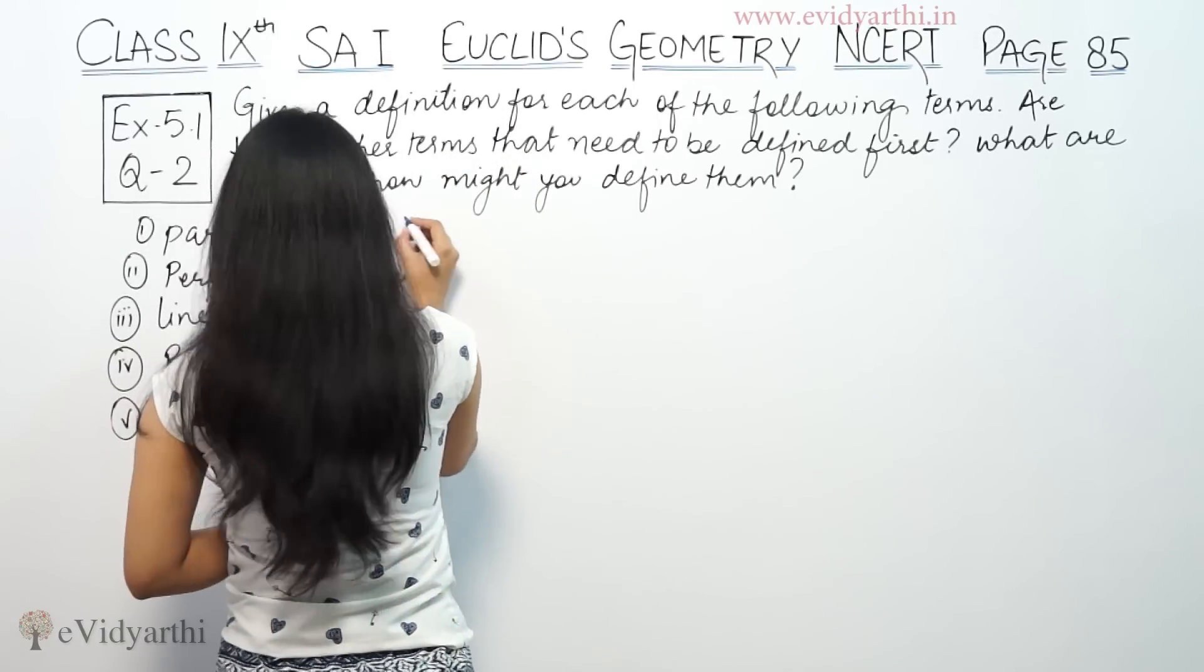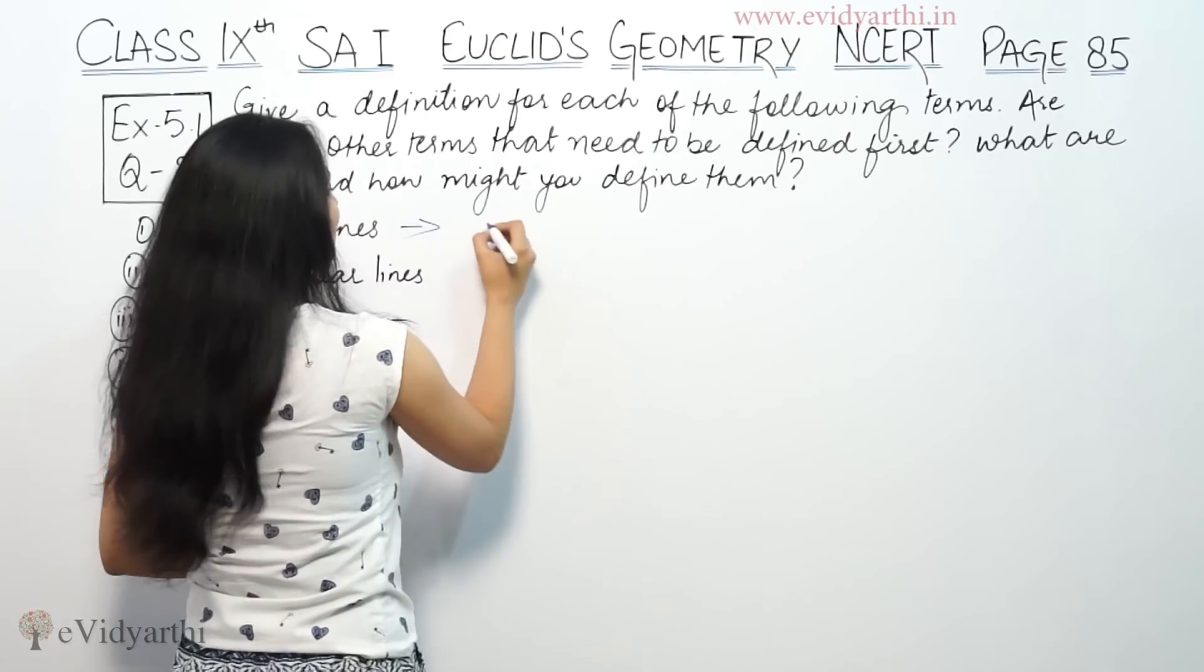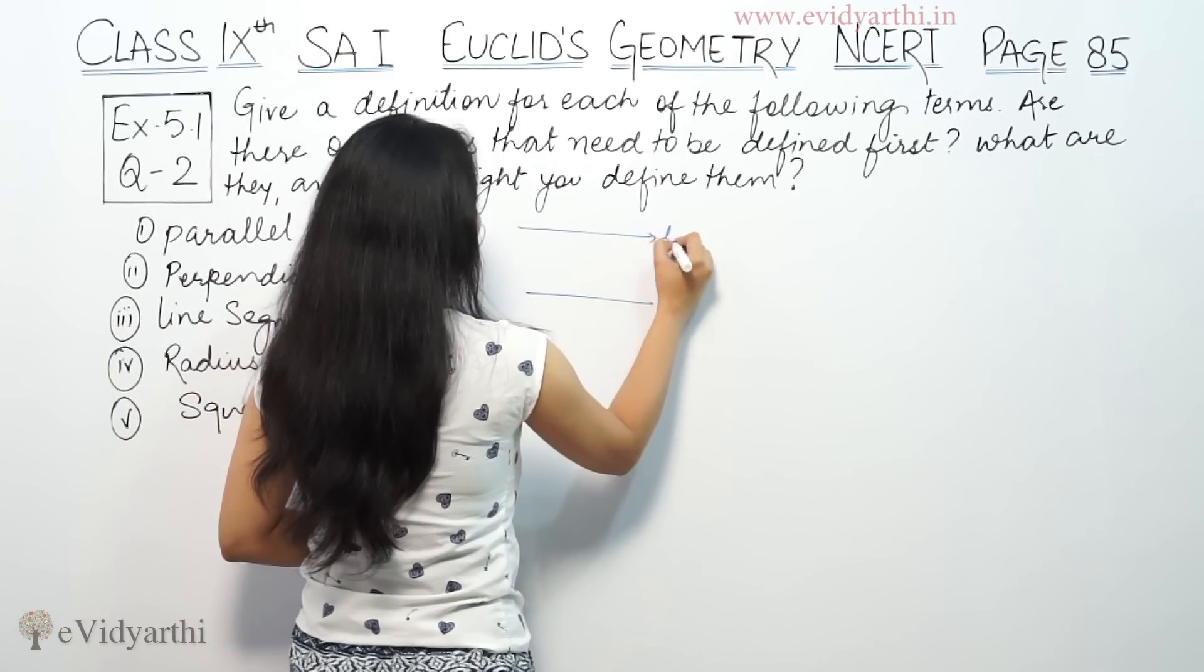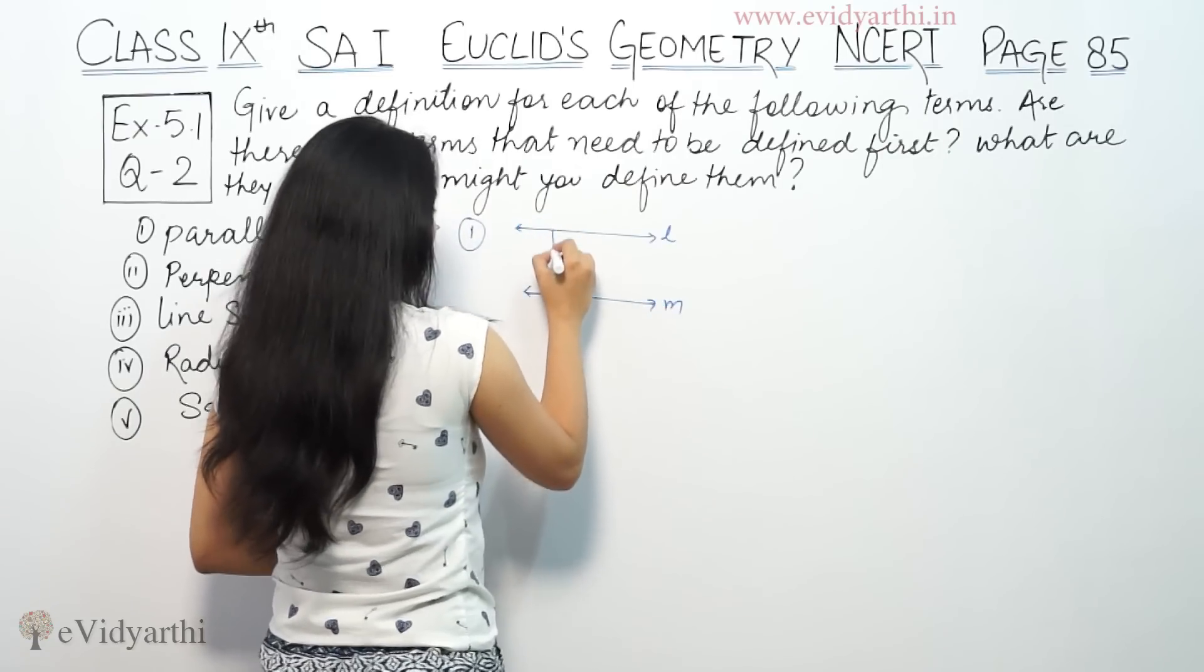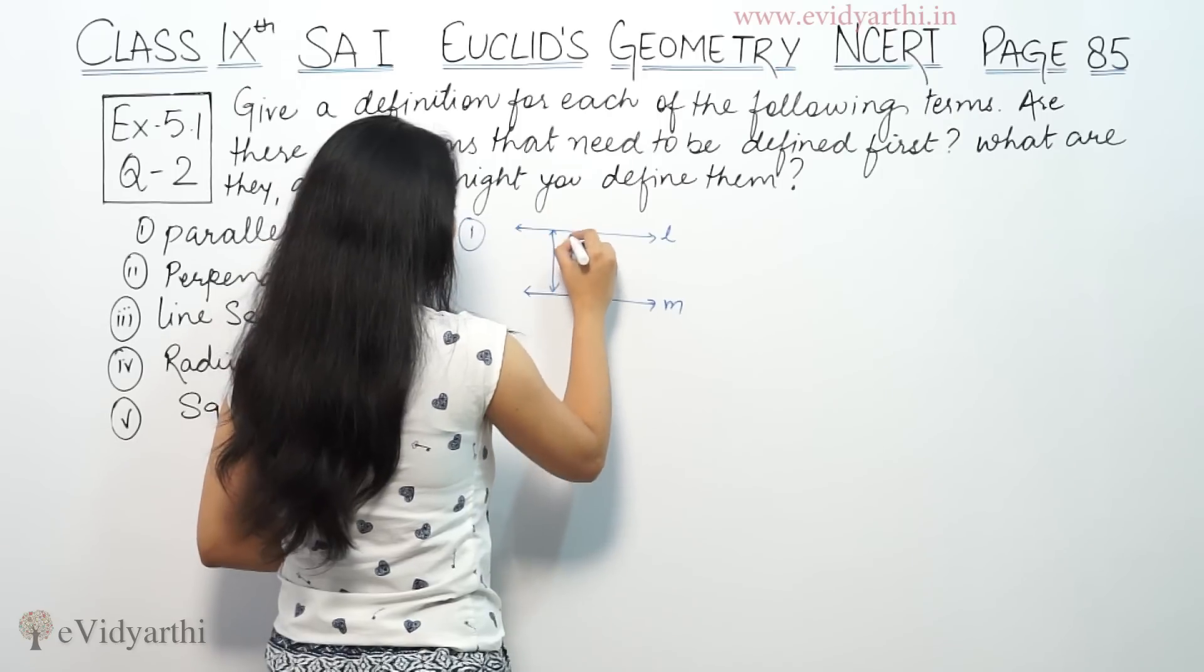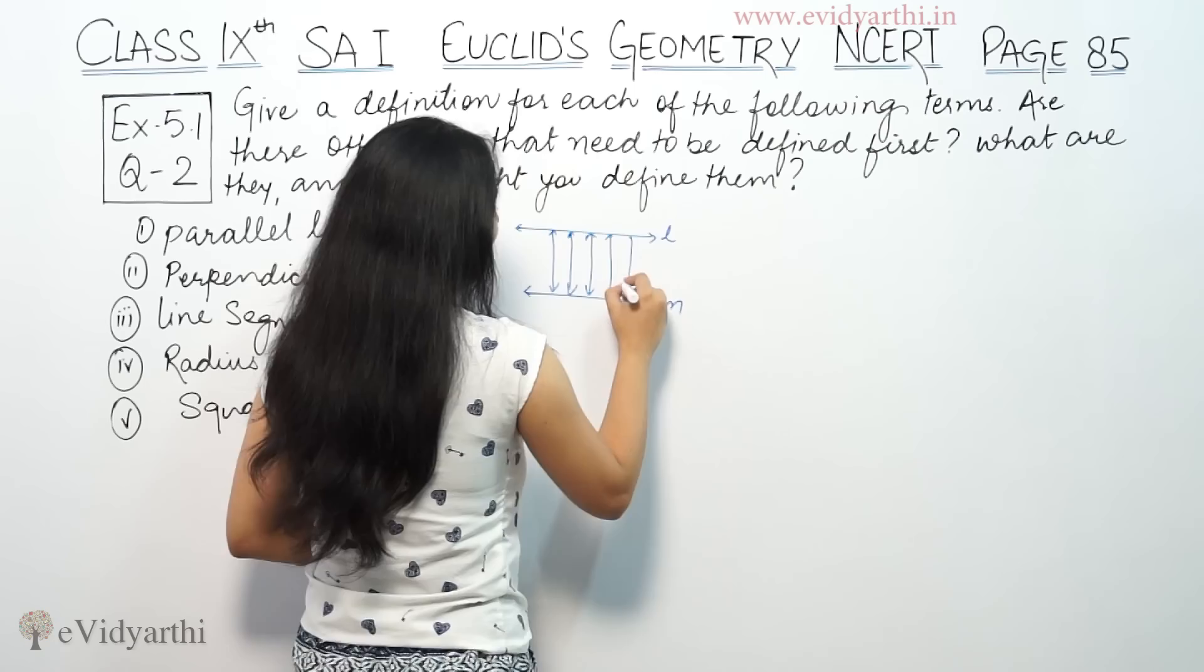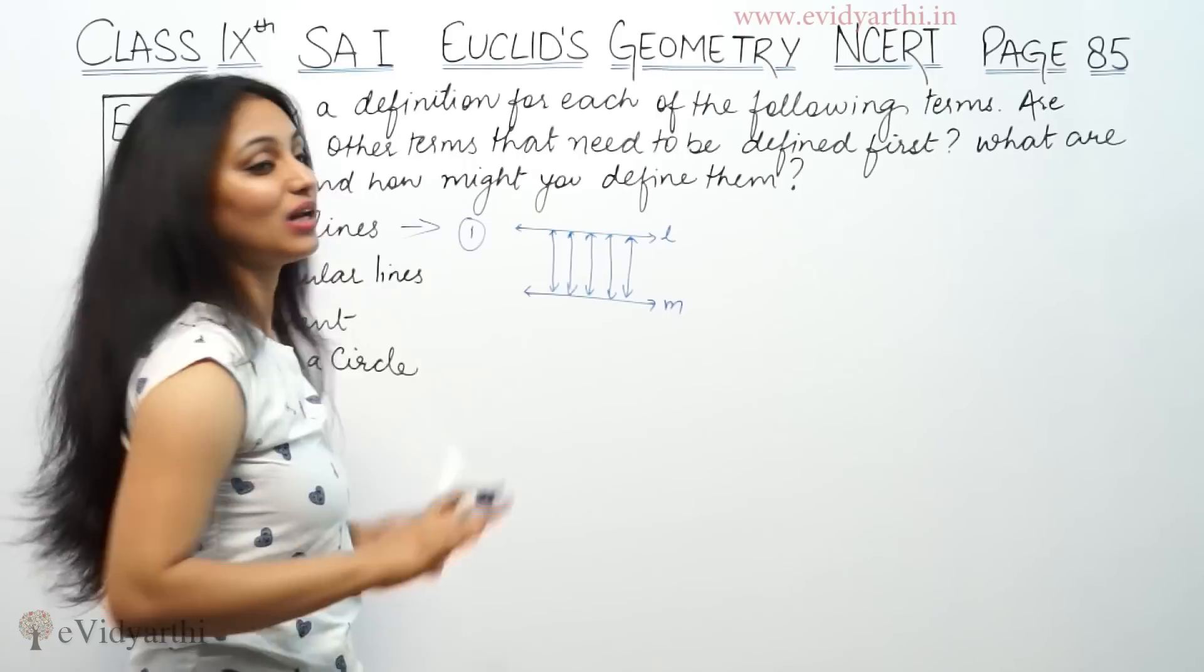First part is parallel lines. Parallel lines are like this line and this line. Suppose this is L, this is M. The distance between them is the same.